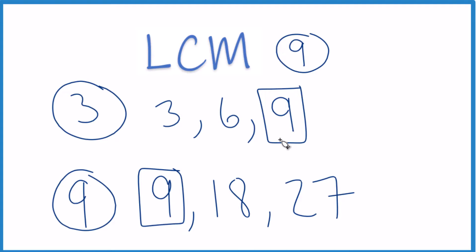There are other ways to do this like prime factorization. Unless you have a big number, this method works pretty well. This is Dr. B finding the least common multiple for 3 and 9. The answer is 9. Thanks for watching.